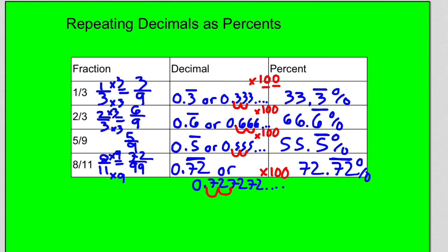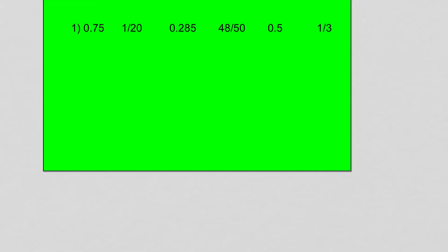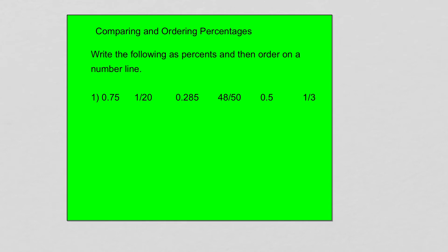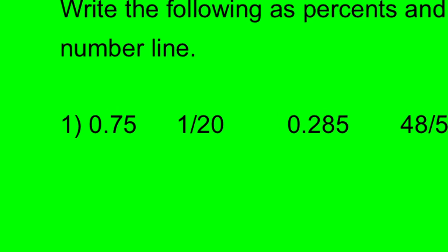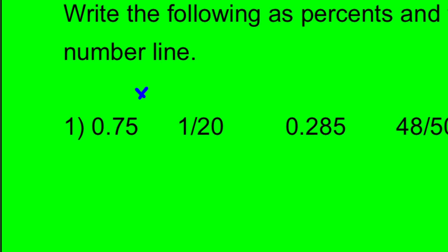So that's how you take repeating decimals and turn them into percents. Now the next thing I'd like to do is compare and order percentages. We're going to write the following as percents and then order them on a number line. It's a lot easier to order the numbers if you have them written as percents — this also gives us a good review of all the conversions we've done. Start off with 0.75 or 75-hundredths — to make that a percent, you mentally multiply by 100, the decimal moves two spots to the right, and that is 75 percent.